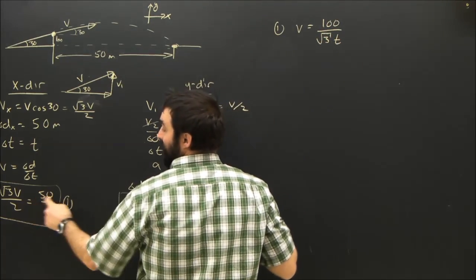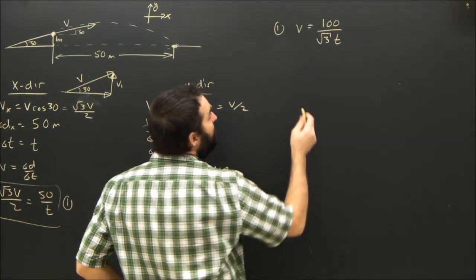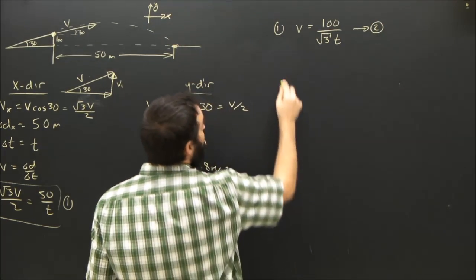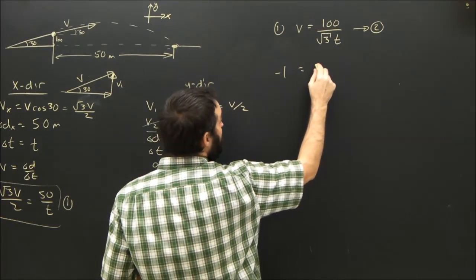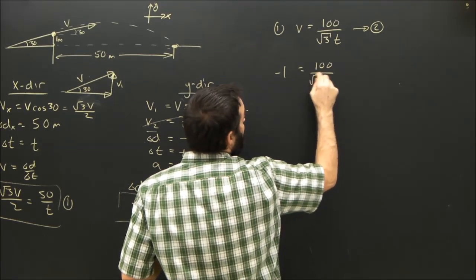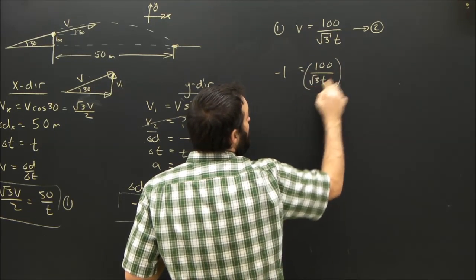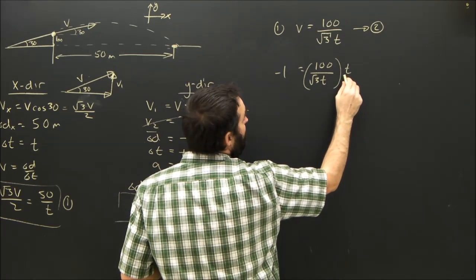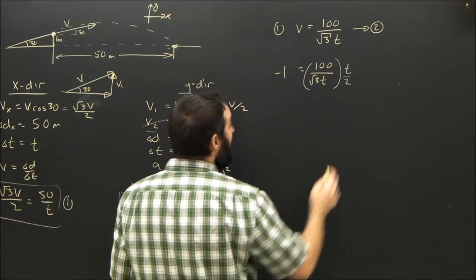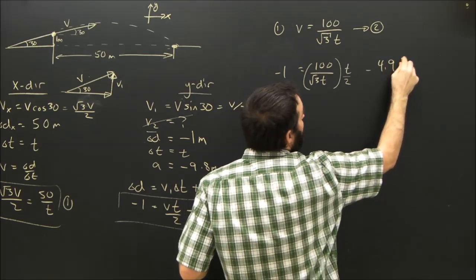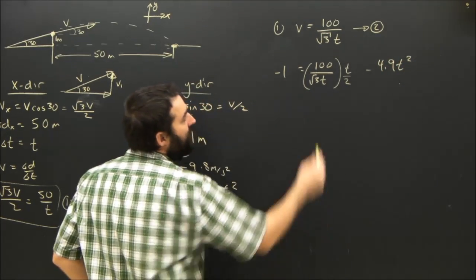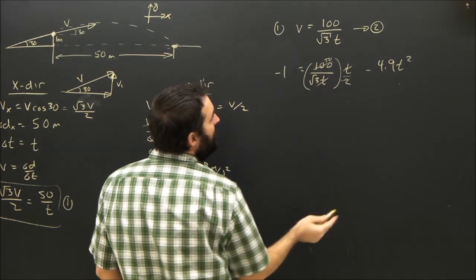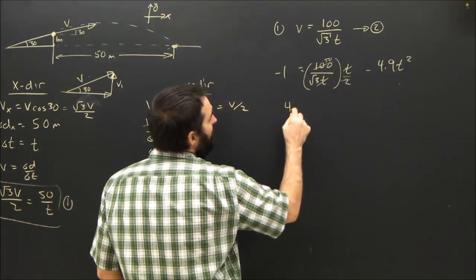V equals 100 over root 3t. Of course, I'd multiply the 50 by 2 to get that 100. Now I'm going to substitute that into 2 and that will give me negative 1 equals 100 over root 3t times t over 2 minus 4.9 t squared. My t's are going to cancel. This will become 50.